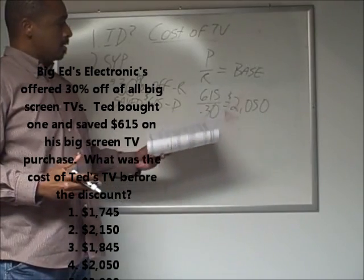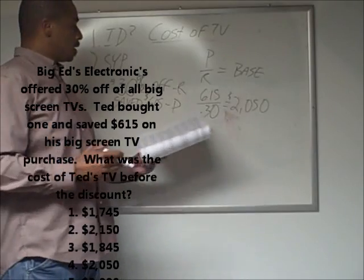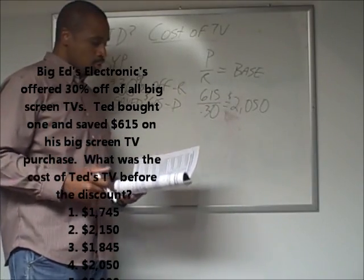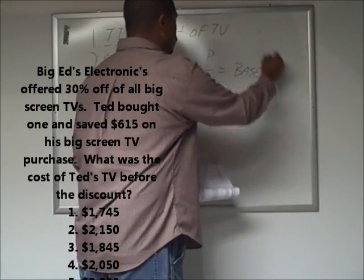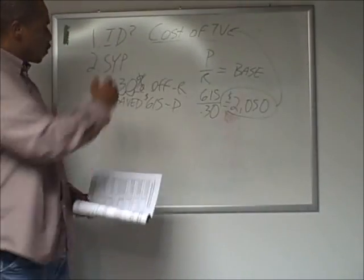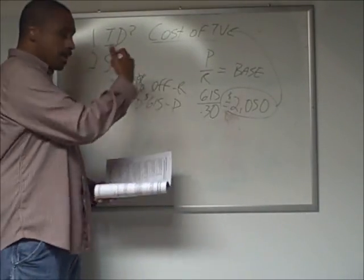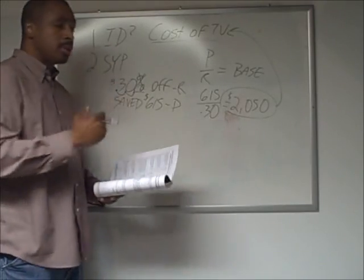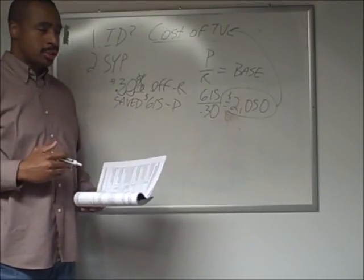Ted got 30% off and saved $615 on this purchase. Because we started with the question, we knew exactly what we were going for. As we moved to step two and began to state our path — which is not figuring anything out, but simply pulling out pieces of information from the problem.